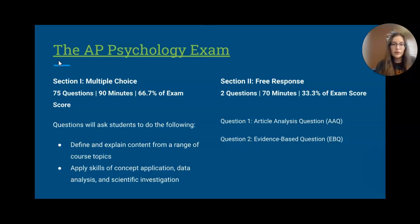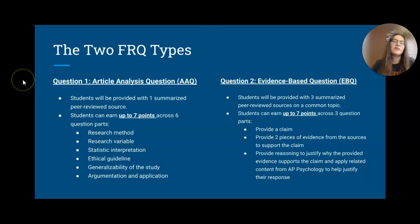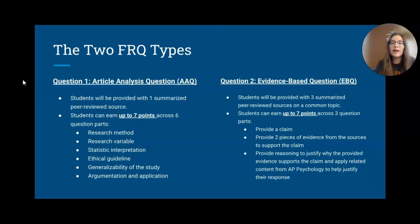There are two different types of FRQs. One is the Article Analysis Question, or AAQ, and the second is the Evidence-Based Question, or EBQ. The AAQ is a research study analysis — digging deep into variables and data of a specific study — while the EBQ provides three articles and you'll synthesize and form a claim based on the information in them.